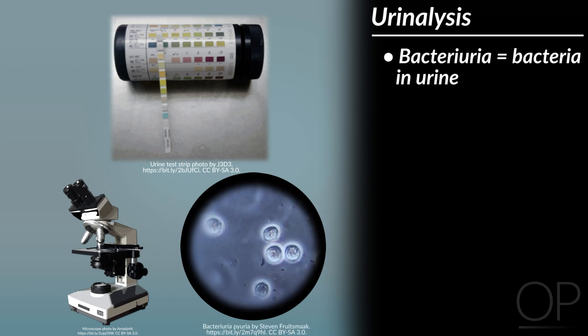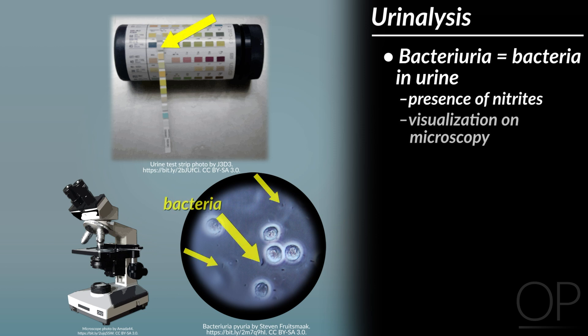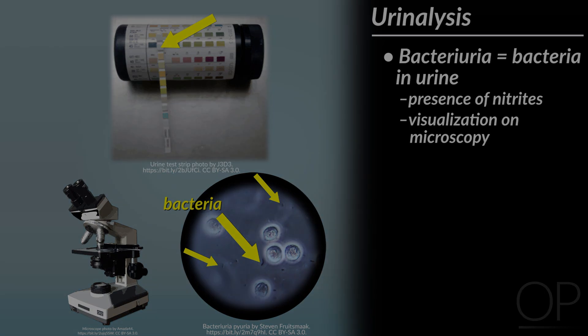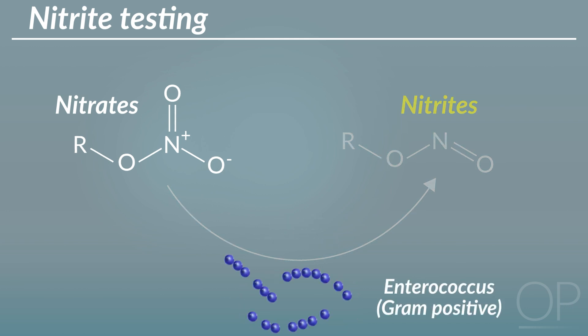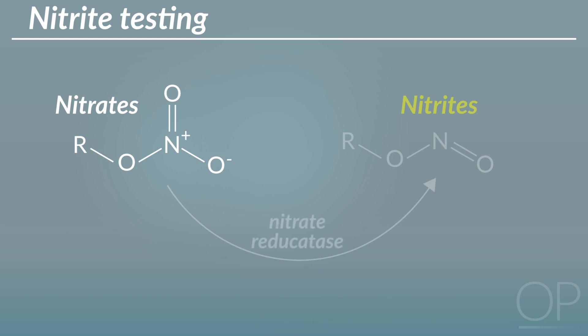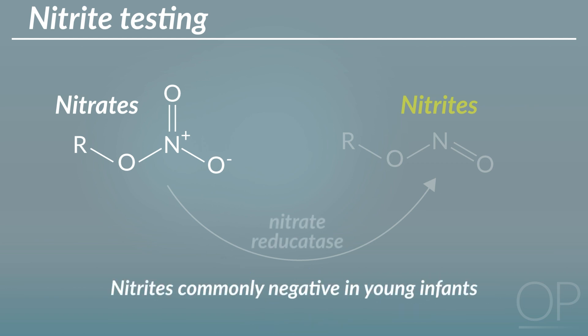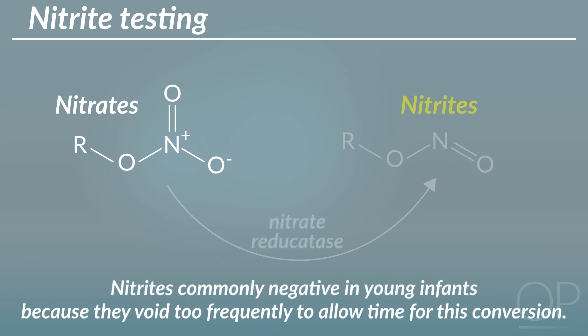Bacteriuria refers to evidence of bacteria in the urine. This is typically seen by the presence of nitrites on urinalysis or bacteria visualized on microscopy. Nitrites are produced by an enzyme in many gram-negative bacteria, which reduces the nitrate naturally present in urine to nitrite. The nitrite test will be negative if the infection is caused by a gram-positive organism like enterococcus. This test is also commonly negative in young infants because they void too frequently to allow time for this conversion.